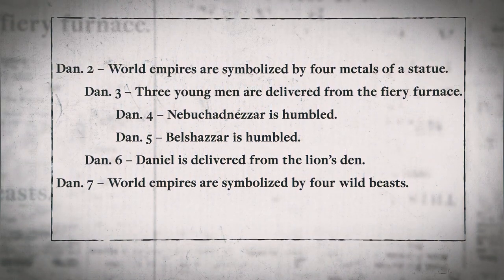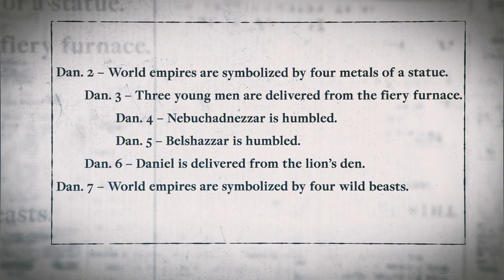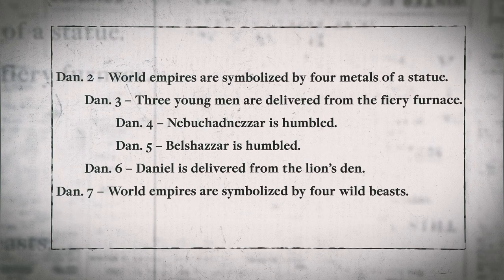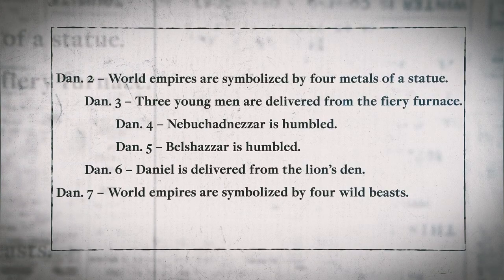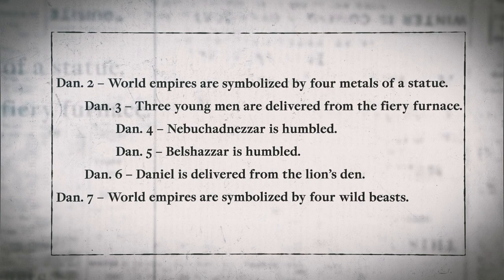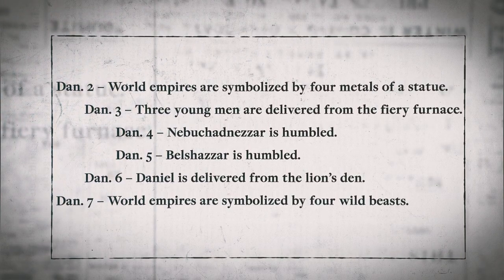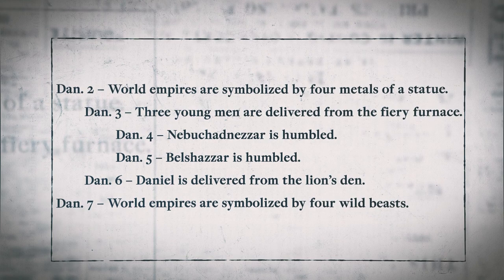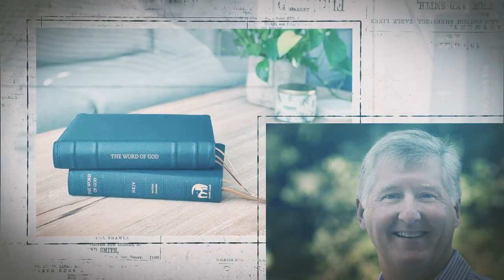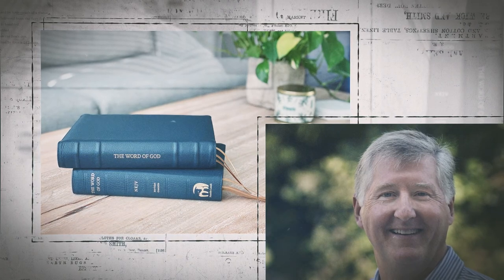In chapter 2 of Daniel, world empires are symbolized by four medals of a statue. In Daniel 3, three young men are delivered from the fiery furnace. In Daniel 4, Nebuchadnezzar is humbled. In Daniel 5, Belshazzar is humbled. In Daniel 6, Daniel is delivered from the lion's den. And in Daniel 7, world empires are symbolized by four wild beasts. This chiastic structure clearly reveals the central point of these chapters, which is God's humbling of the prideful.